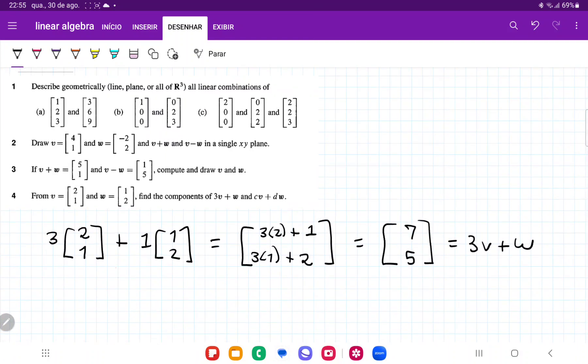And now we want to generically take cv plus dw, right? And so we have that c times v, which is [2, 1], plus dw, which is [1, 2].